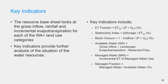The resource base sheet provides an overview of water resources and their current utilization per different land use categories. It looks at the gross inflow, rainfall, and incremental evapotranspiration for each of the water accounting plus land use categories, and it assesses the current utilization rate of the river basin. Key indicators provide further analysis of the water resources situation.